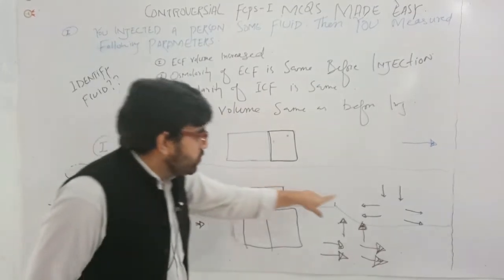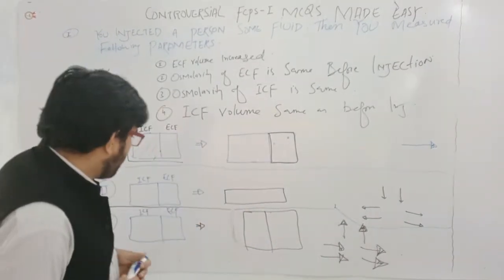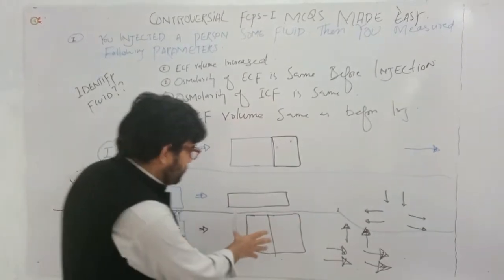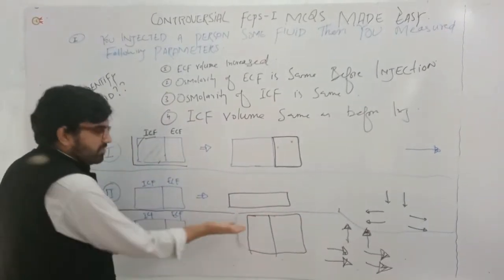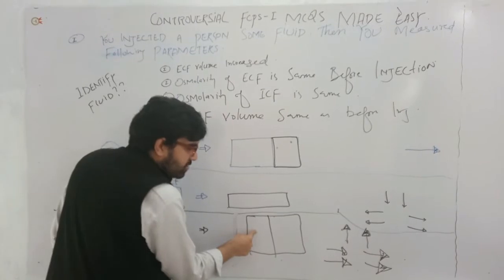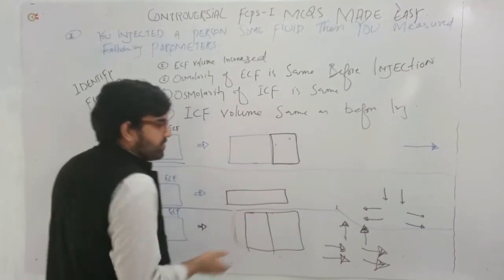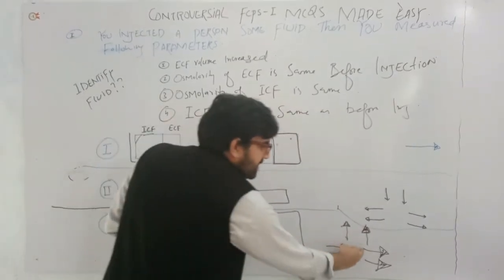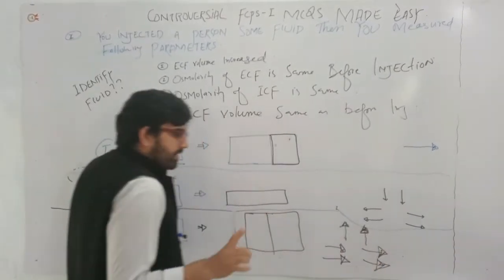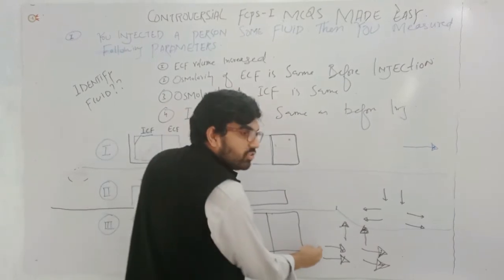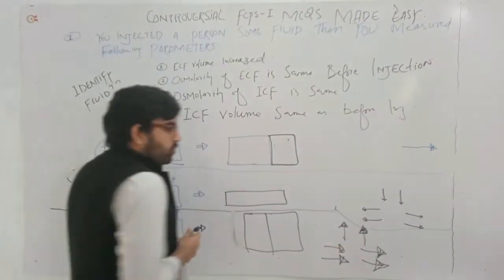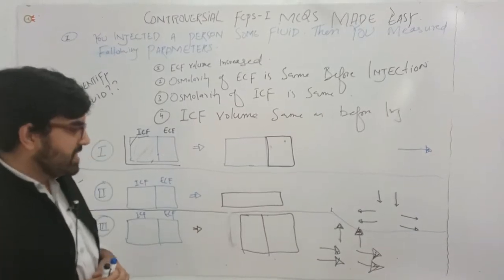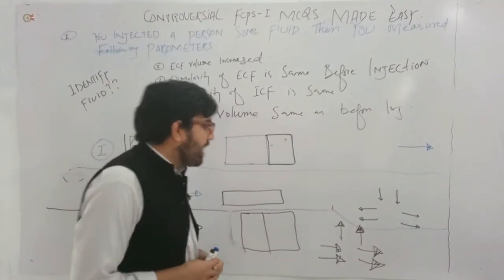In the third scenario, comparing both boxes, the osmolality of both extracellular fluid and intracellular fluid are increased — arrows moving upward. The volume of the extracellular fluid is also increasing, but the volume of intracellular fluid is decreased. This type of fluid is hypertonic saline. So remember: isotonic increases only ECF volume, hypotonic decreases osmolality and increases both compartment volumes, and hypertonic increases osmolality and decreases intracellular volume.